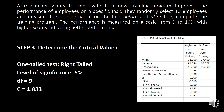Going back to step number three — determining the critical value — from the Excel results, we locate the T-critical one-tail value, which is 1.833, and the DF displayed is 9.